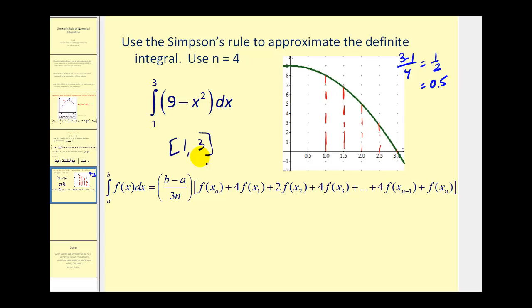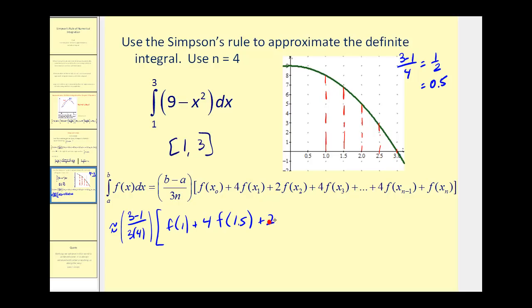So we have b minus a divided by three n — that's three minus one divided by three times four — times f of x sub zero. x sub zero is one, so we have f of one, plus four times f of x sub one. Since a equals one and each interval has width 0.5, that's f of one point five. The next coefficient is two, so plus two times f of two. Then plus four times f of two point five. And our interval ends at three, so we go back to a coefficient of one: plus f of three. Three minus one is two over twelve, or one sixth.